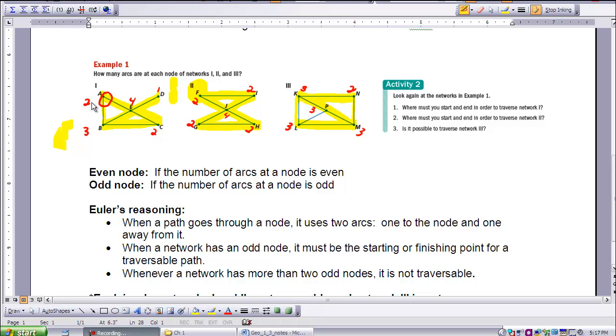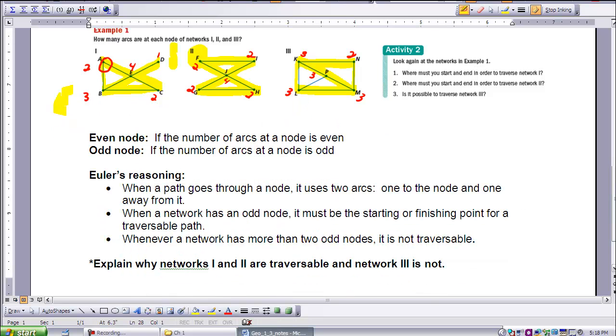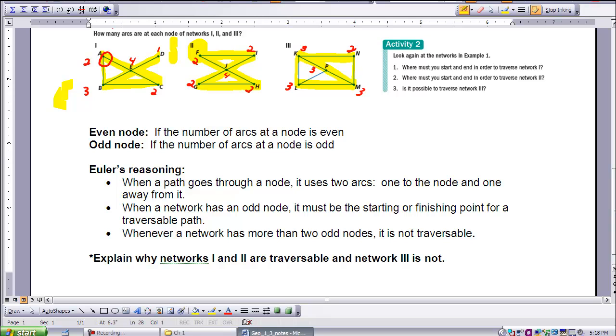If we look up here, we wrote how many arcs came in. Two and three here, two, one, four, and so on. Well, Euler had some reasoning that he discovered while investigating the Konigsberg problem. When a path goes through a node, it uses two arcs, one to the node and one away from it.